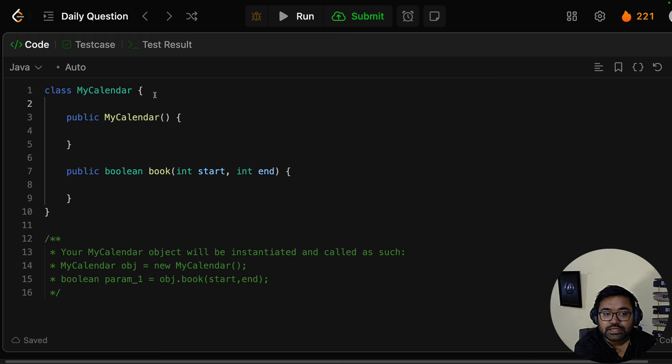Let me show you this. You have a class called MyCalendar, and you will have two functions with declarations only. You will have to provide the definitions for MyCalendar and the book function.